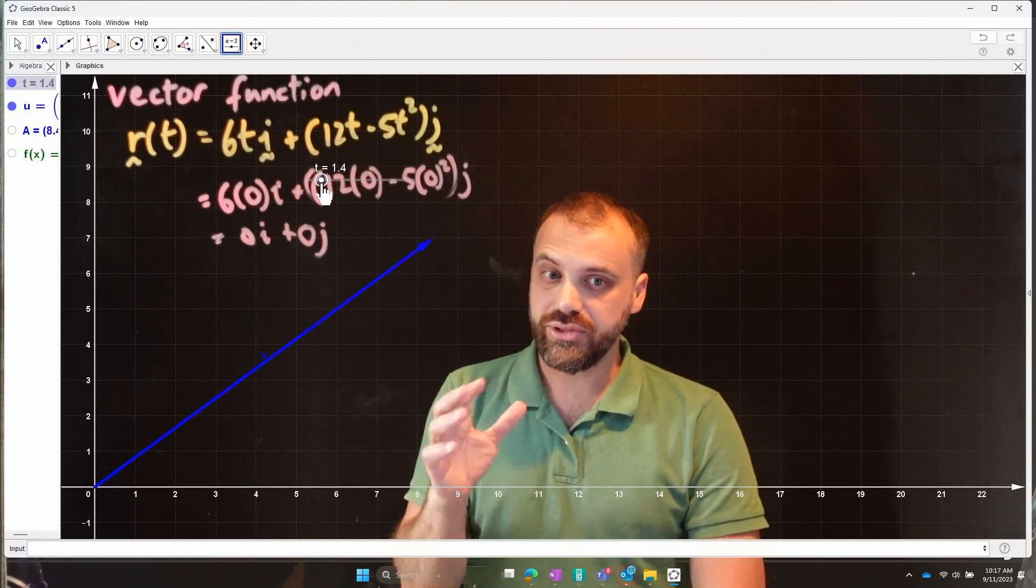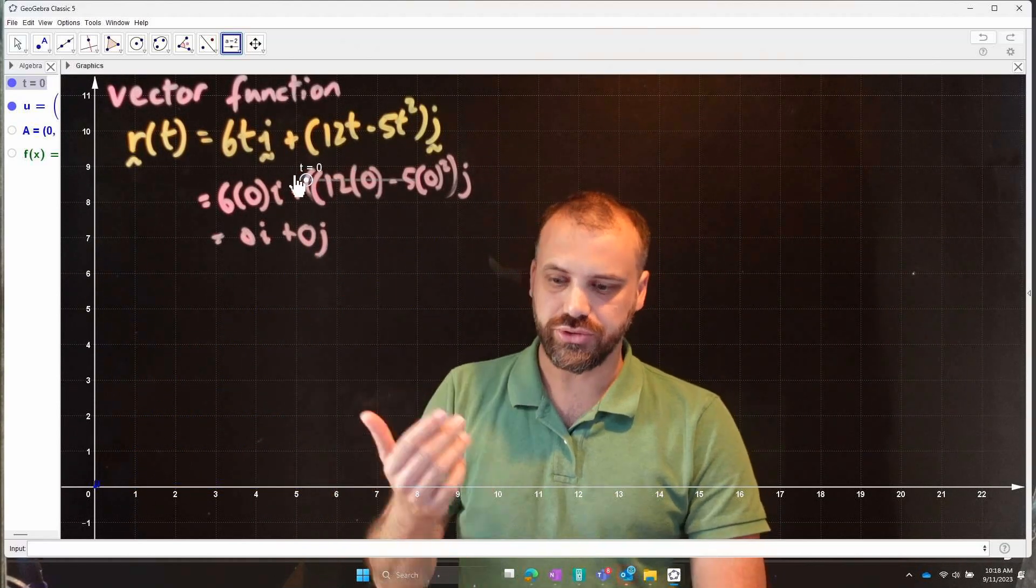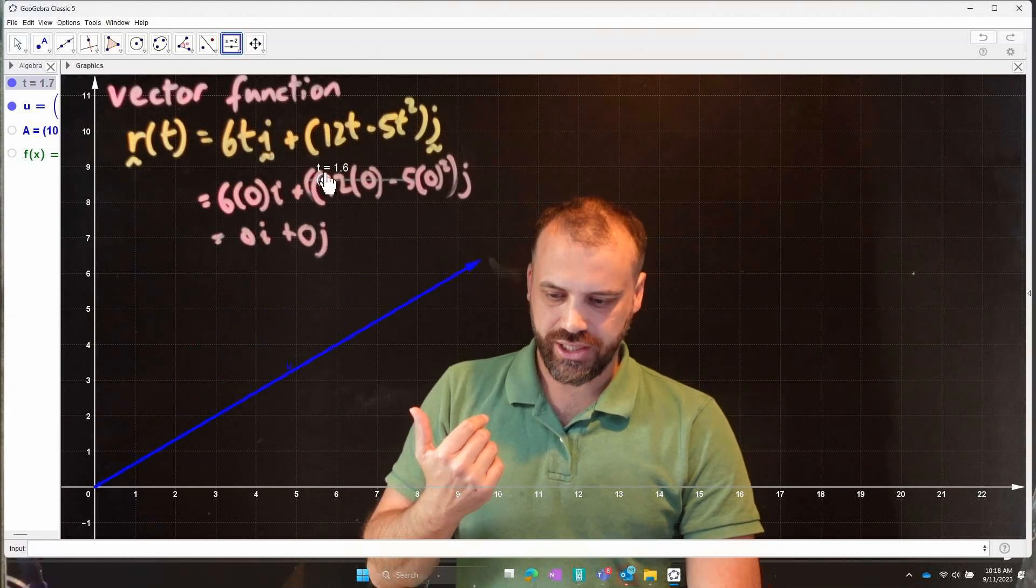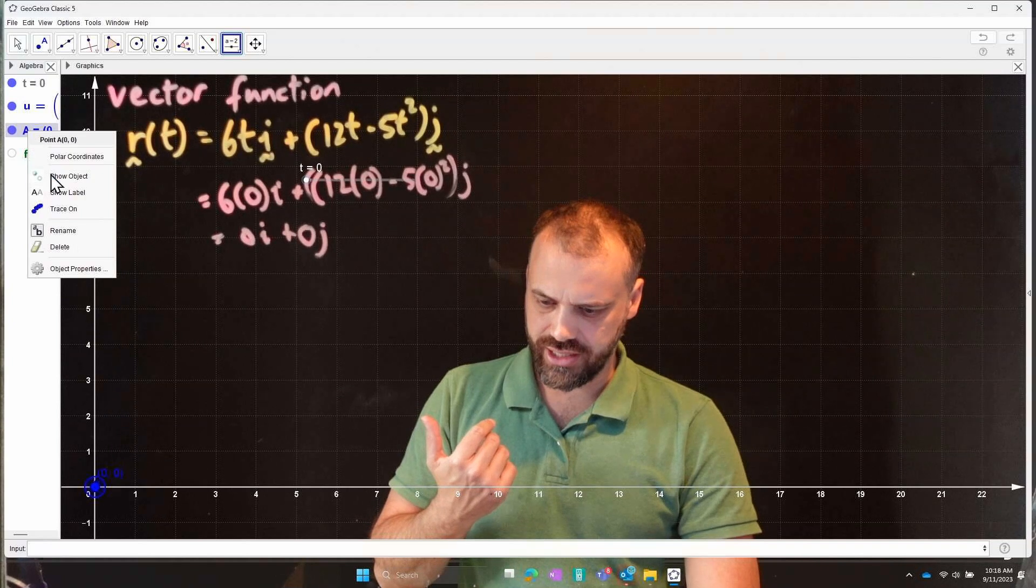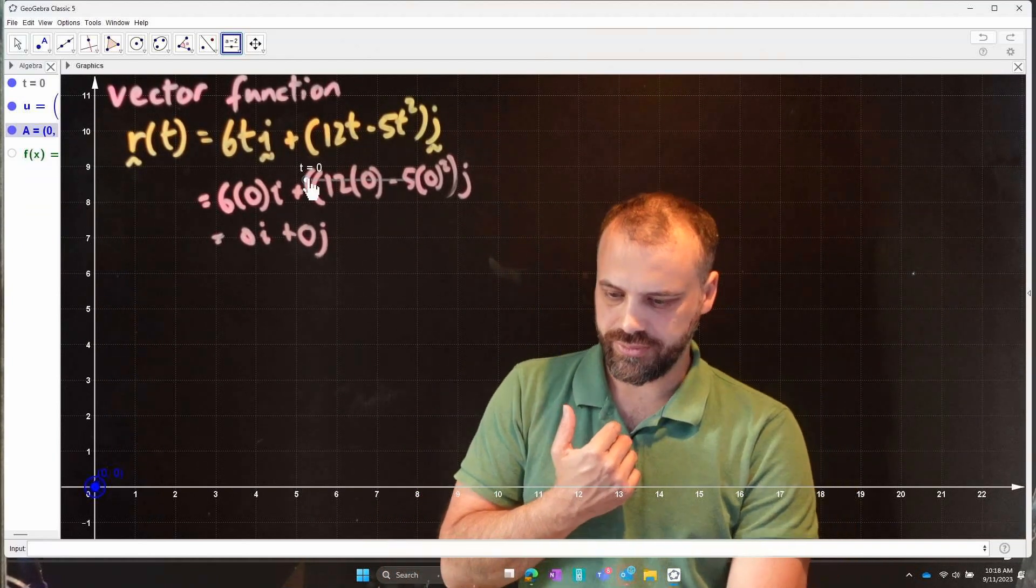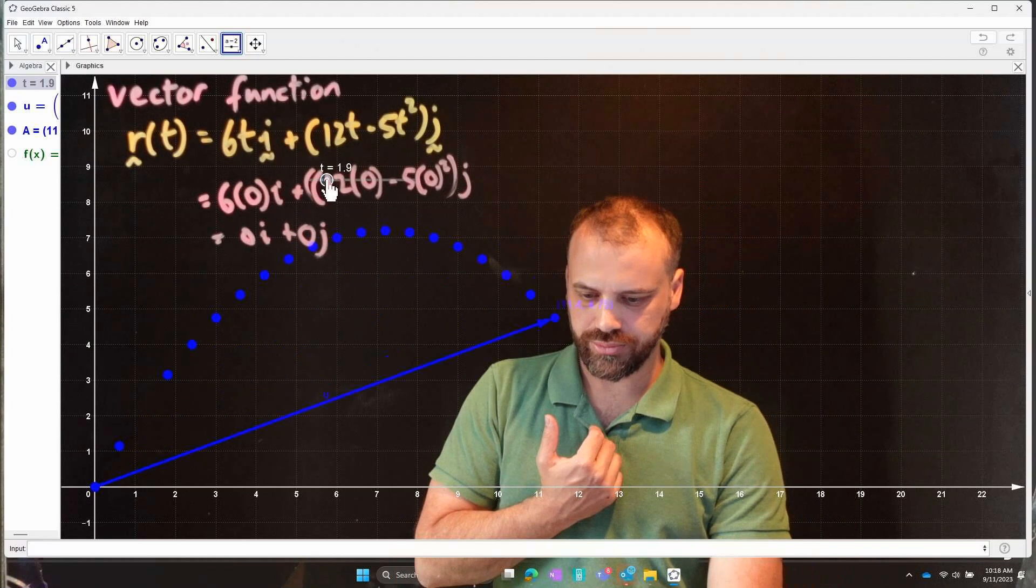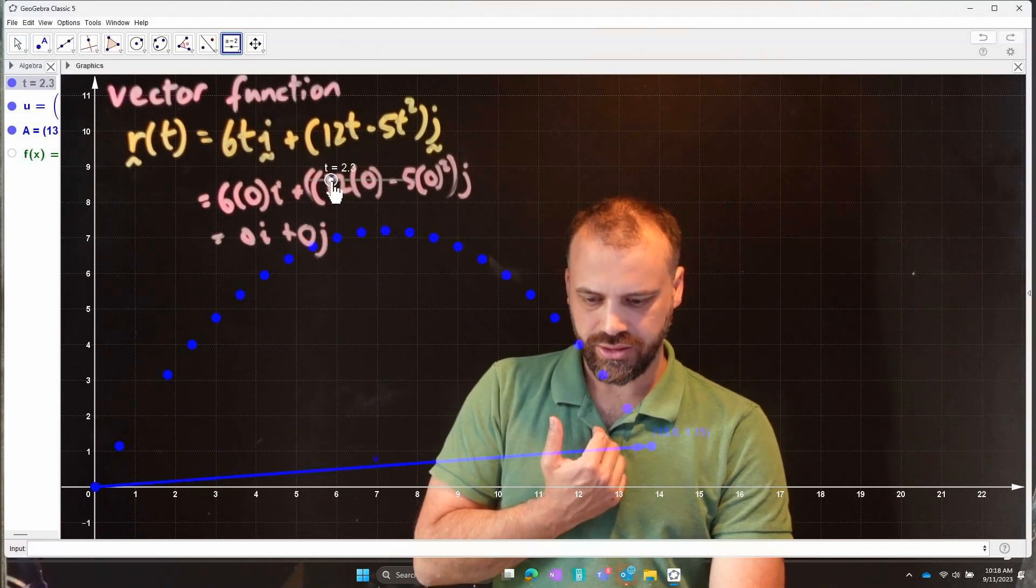Now, we're talking about a ball, but anything in motion can be modeled using a vector function. Okay. So why don't we just do something a little bit fancy here. Turn a trace on and watch this thing happen.